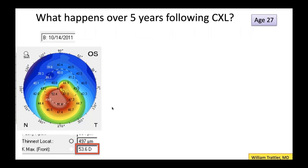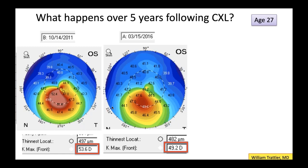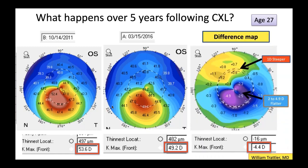Over five years of following crosslinking, you see some pretty remarkable results. I'm fortunate to be following patients for over 10 years. Here's a patient who came in in 2011 — their K-Max went from 53.6 to 49.2 by 2016, showing nice flattening. The difference map shows the cone got flatter while the flat part got steeper, rounding out the cornea and making it less irregular. Over five years, this patient got 4.4 diopters of flattening of their K-Max.